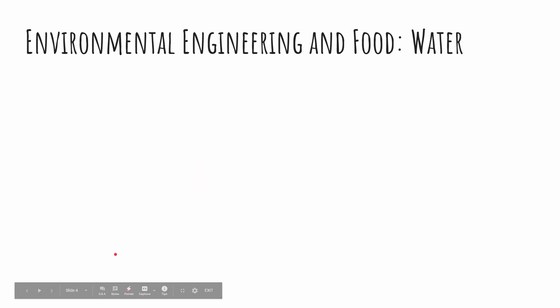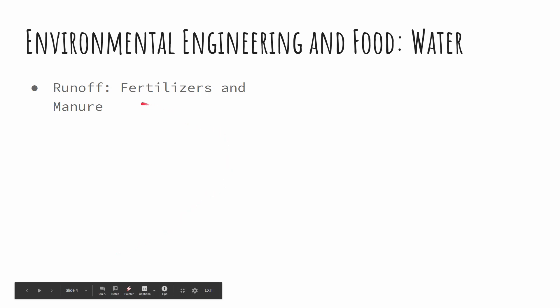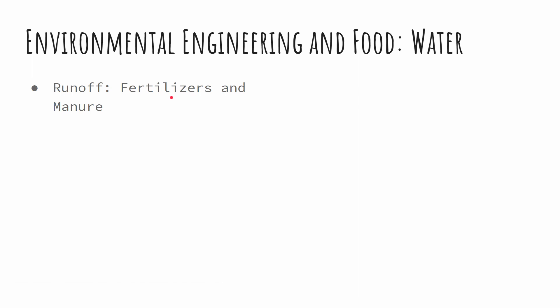Now let's move on to water. Food production affects water in a few different ways, but the biggest one is from something called runoff. This is where the things we're applying to the plants — when it rains or when we water those crops — run off into the soil and waterways. That includes fertilizers we apply on purpose, as well as manure and other animal byproducts. These can cause issues including algae blooms and bacteria growth.